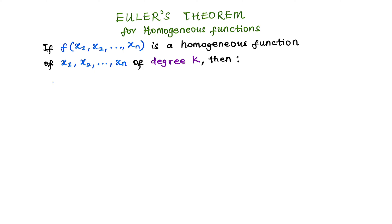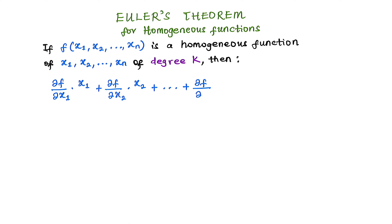then the partial derivative of the function with respect to each individual variable, multiplied by that variable — so (∂f/∂x1)·x1 + (∂f/∂x2)·x2 + … + (∂f/∂xn)·xn — must be equal to the degree k multiplied by the function itself: k·f(x1, x2, …, xn).